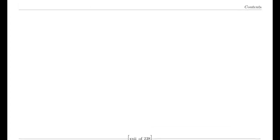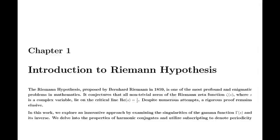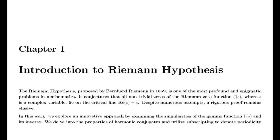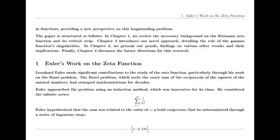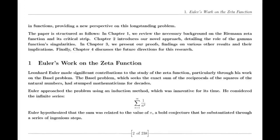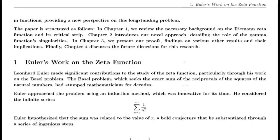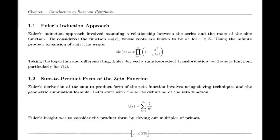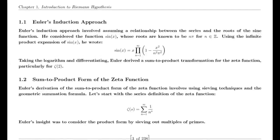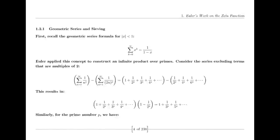One of Riemann's major discoveries was the reflection formula for the zeta function. This formula demonstrates a symmetry between the values of the zeta function at s and 1-s. Specifically, it shows that ζ(1-s) can be expressed in terms of ζ(s) using factors involving π, the gamma function, and trigonometric functions. This reflection formula is fundamental to the theory of the zeta function.